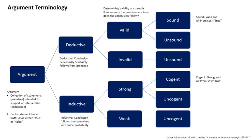An example of an argument using deductive reasoning: All men are mortal (first premise). Socrates is a man (second premise). Therefore, Socrates is mortal (conclusion). The first premise states that all objects classified as a man have the attribute mortal. The second premise states that Socrates is classified as a man, a member of the set of men. The conclusion then states that Socrates must be mortal because he inherits this attribute from his classification as a man.